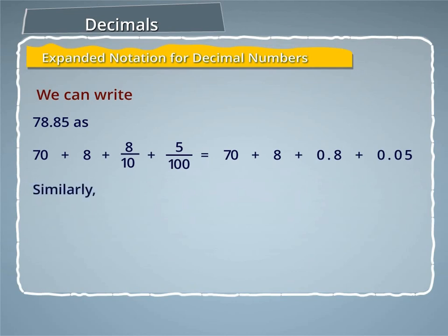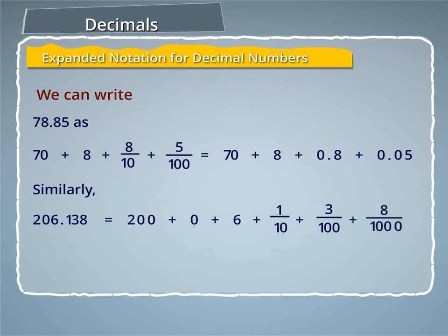Similarly, 206.138 is equal to 200 plus 0 plus 6 plus 1 by 10 plus 3 by 100 plus 8 by 1000.